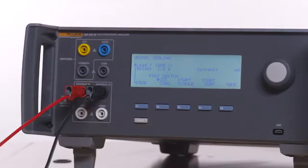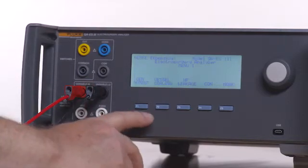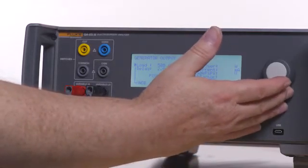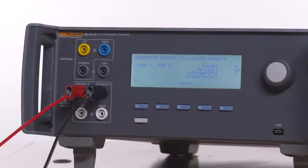Press the Back button on the QAES-3 and then F1 for generator output. Select 500 ohm load. Press F4 for start continuous.